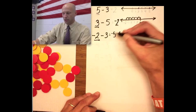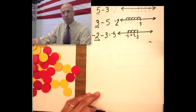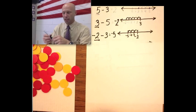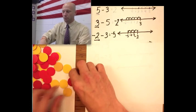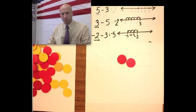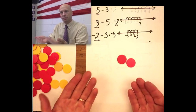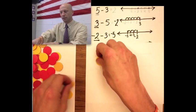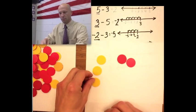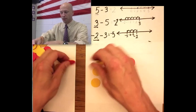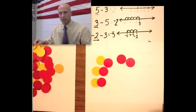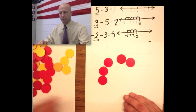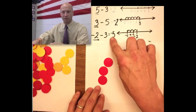So negative 2 minus 3 is negative 5. The way I view this in my head is I start on negative 2 and when I'm subtracting 3 I'm just going even further negative, so that's going to give me minus 5 or negative 5. Here's how it looks on paper. Here's negative 2. I want to take 3 away from this but there aren't 3 yellows here that I can take away. So I need to put my 3 yellows in, but I can't just put 3 yellows in - I have to put 3 zero pairs in. Now I can take my 3 yellows away and that leaves me with negative 5.